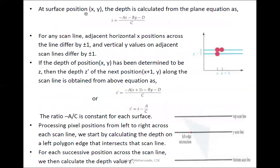At surface position x, y, the depth is calculated from the plane equation Ax + By + Cz + D = 0. Rearranging, we get the depth z. For any scan line, adjacent horizontal positions across the line differ by plus or minus one — meaning the next position is x+1 or x-1 — and for adjacent scan lines, y changes by plus or minus one.